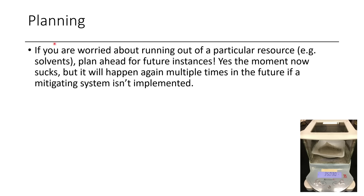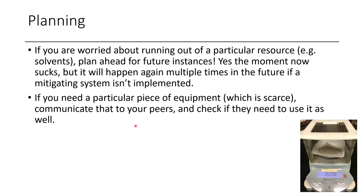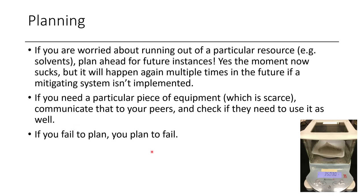If you're worried about running out of something, plan ahead and make sure you have extra solvents. If planning doesn't occur, the problem is going to happen again and again until you sort out a proper system to address it. If you need a particular piece of scarce equipment — an obscure round-bottom flask or a large Erlenmeyer — communicate with your peers and check if they need to use it. You want to go above and beyond to prevent conflict and be considerate. If you fail to plan, you plan to fail.